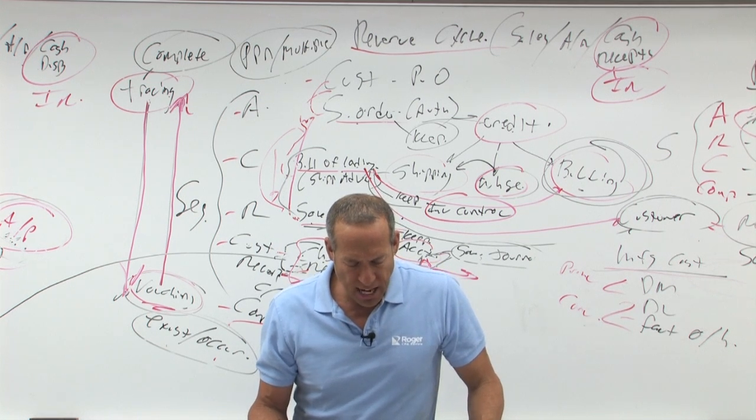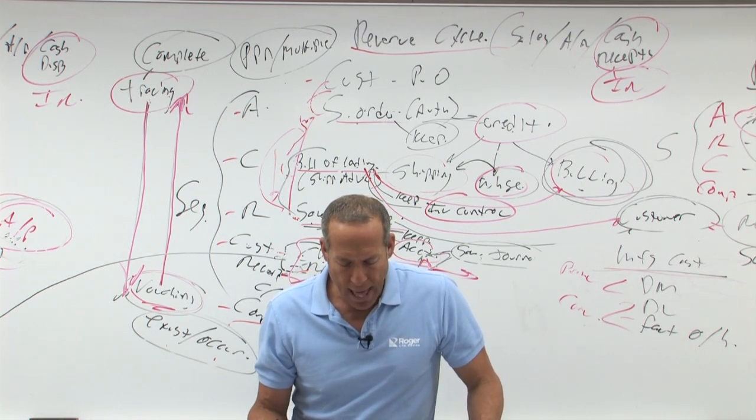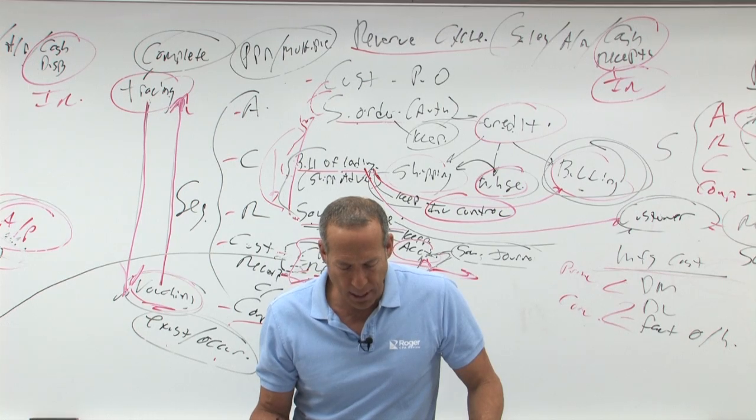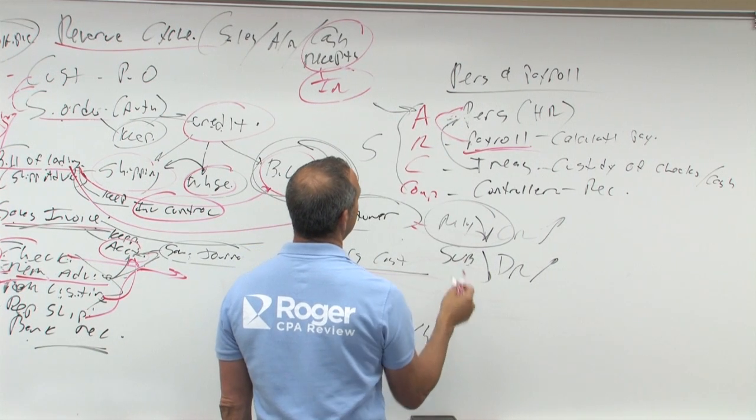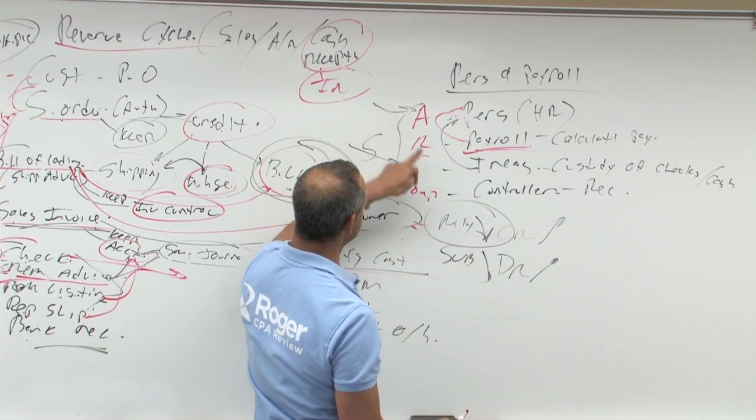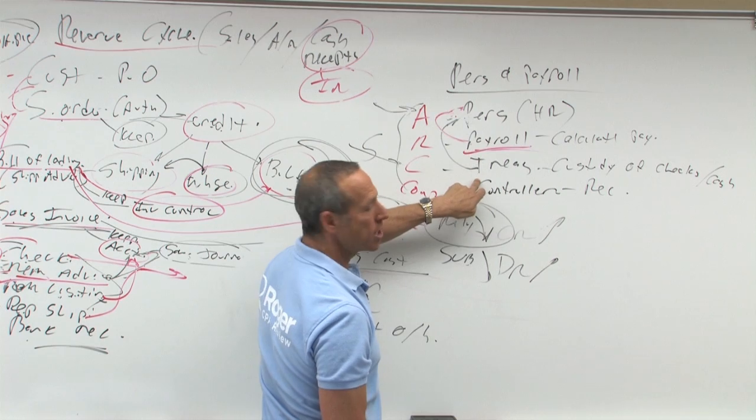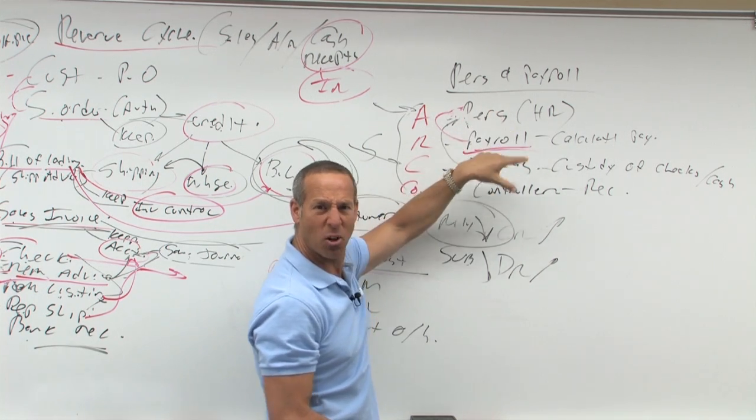Number 14, the purpose of segregating the duties of hiring personnel and distributing payroll checks is to separate the what? Hiring personnel. Who does that? Boom. Distributing payroll checks. Boom. Authorization from custody. Personnel, treasurer. See how I keep it simple? Kiss. Keep it simple. Stupid.